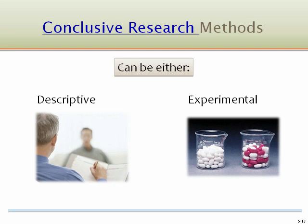Conclusive research can be descriptive in nature, such as when it profiles a typical user or non-user of a particular brand according to a survey. It can also be experimental, such as when a soft drink producer conducts a taste test to determine which formulation of a green, high-caffeine drink is preferred by customers. Conclusive research can also be collected from merchandise scanned at a store or from a panel of consumers who record all of their purchases.